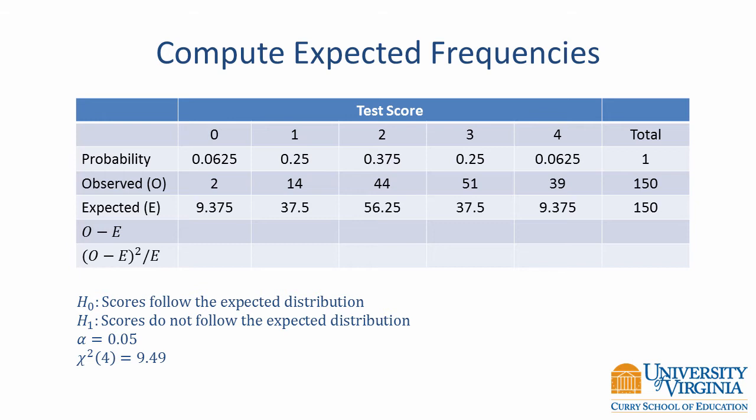The first step in computing the chi-square statistic is to find the expected frequencies. Returning to our example, we compute the expected frequency by multiplying the probability by the sample size. For example, 150 times 0.0625 is 9.375.